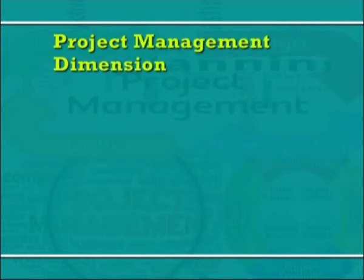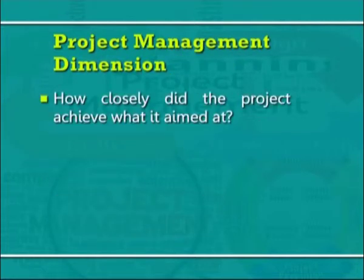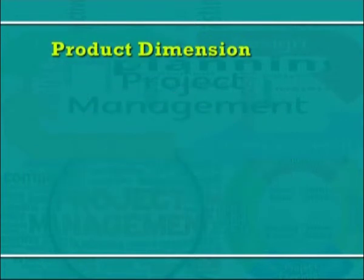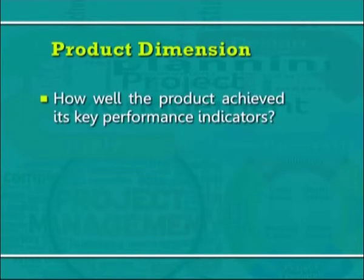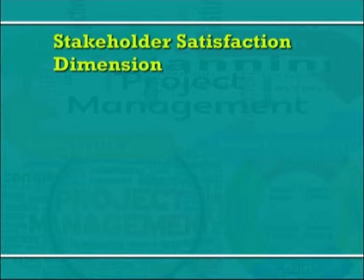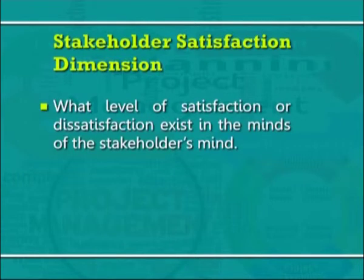Project management dimension — how closely did the project achieve what it aimed at? Did the project meet any specific objective which was specified before starting of the project? Product dimension — how well did the product achieve its key performance indicators? What were the critical success factors? Stakeholder satisfaction dimension — what level of satisfaction or dissatisfaction exists in the minds of the stakeholders?